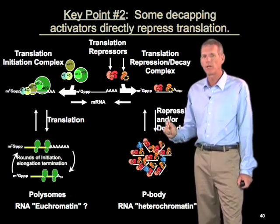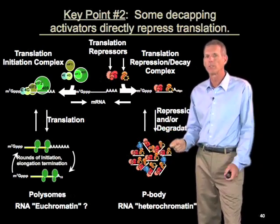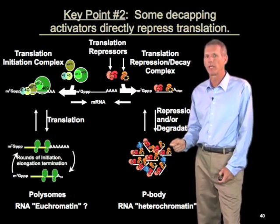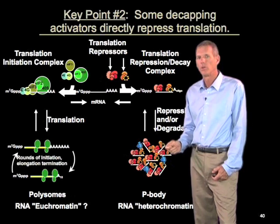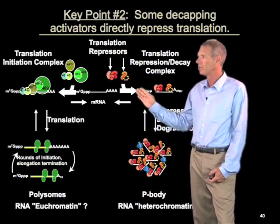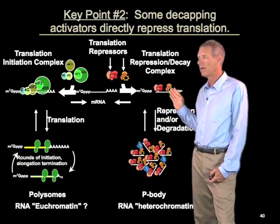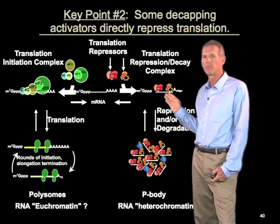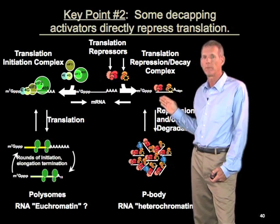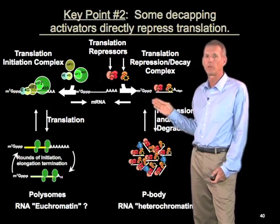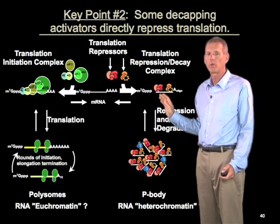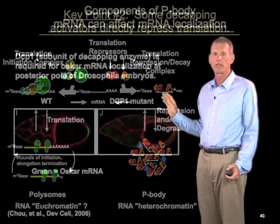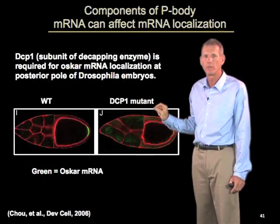I've already told you that localization of mRNAs requires them to be translationally repressed. So now we've described a complex which is involved generally in translational repression. And it might also have a role in RNA localization. In general, we don't really know the answer to that question, but there are hints that it will.